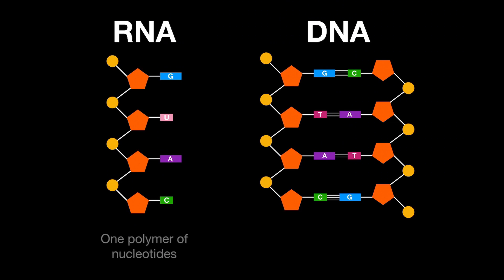There are three notable differences between RNA and DNA. The first is that RNA is one polymer of nucleotides, otherwise referred to as single-stranded, while DNA has two polymers of nucleotides because it has two strands.